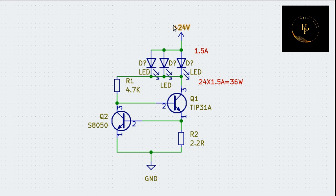Suppose your LED panel is a 24-volt panel and 1.5 ampere — so that is the wattage of this LED panel. We get three data points: 24 volt, 1.5 ampere, and 36 watt. In that situation, how can I design this circuit and which transistor is suitable for this circuit?